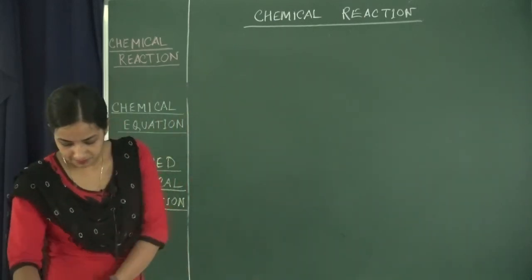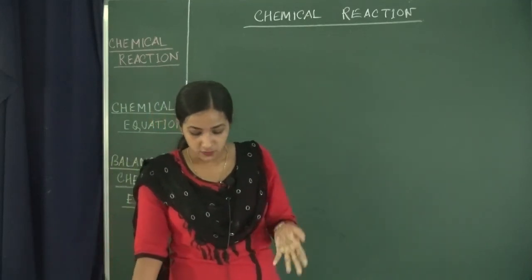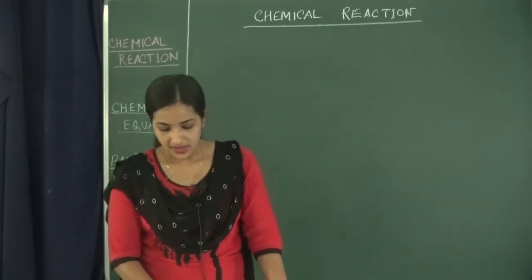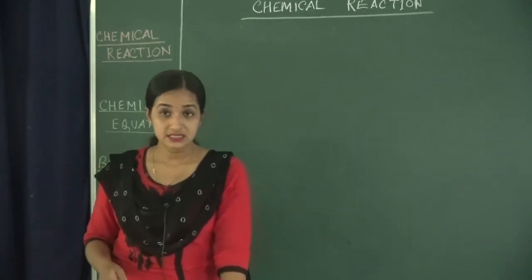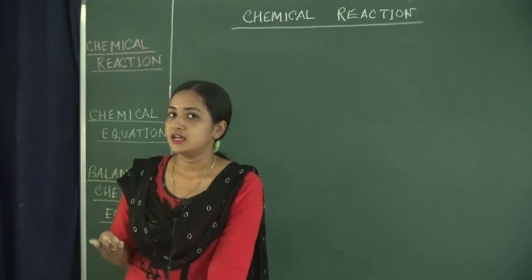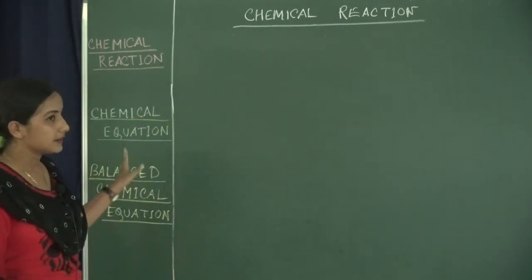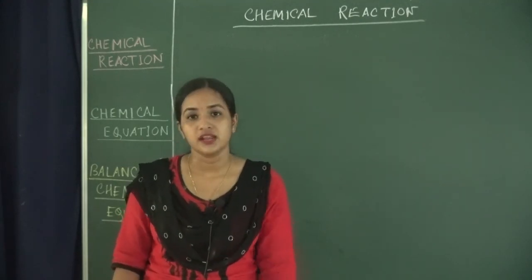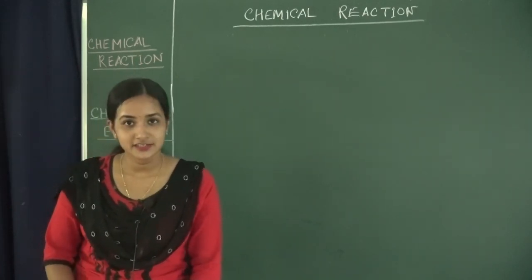Let us revise our topics one more time. A chemical reaction is the transformation of a chemical substance into a new chemical substance by making or breaking atomic bonds. We can observe a chemical reaction by: change in state, change in color, evolution of gas, and change in temperature. A balanced chemical equation is when the mass of the reactants equals the mass of the products. Thank you very much for watching, stay tuned.